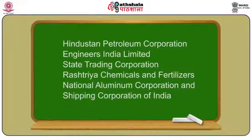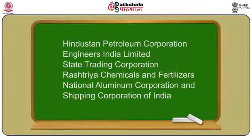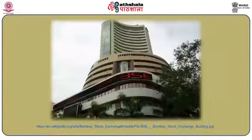In February 2005, the government formally announced a call-off for disinvestment through strategic sale, which was announced by earlier governments, including Hindustan Petroleum Corporation, Engineers India Limited, State Trading Corporation, Rashtriya Chemicals and Fertilizers, National Aluminium Corporation, and Shipping Corporation of India. On 25th November 2005, the government decided in principle to list large profit-making public enterprises on domestic stock exchanges and to selectively sell small portions of their equity. At present, around 47 public enterprises are listed on the Bombay Stock Exchange.